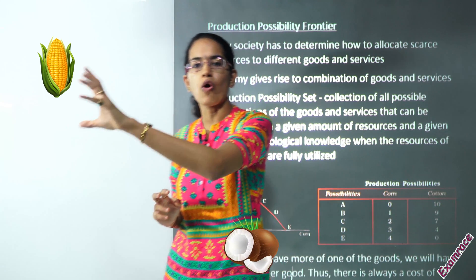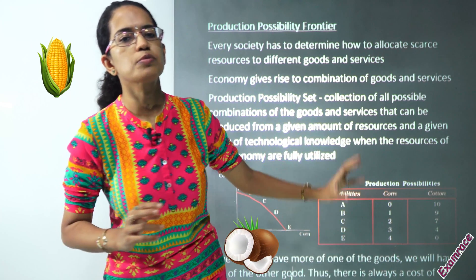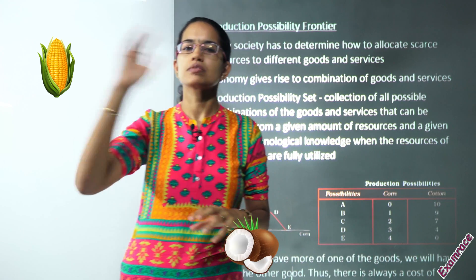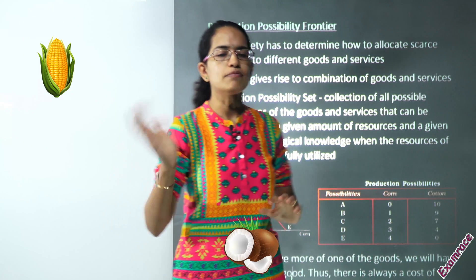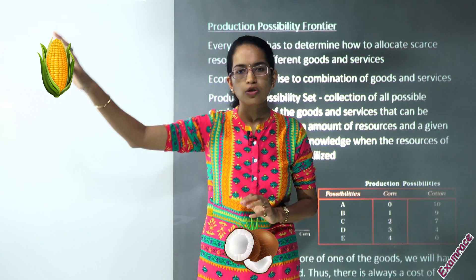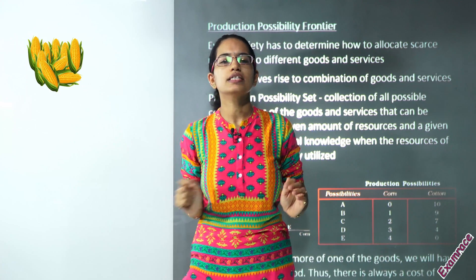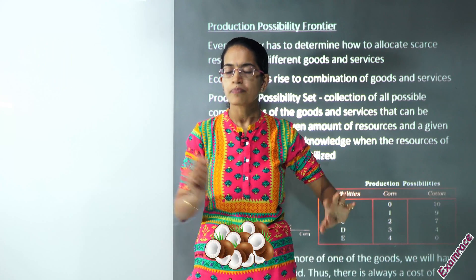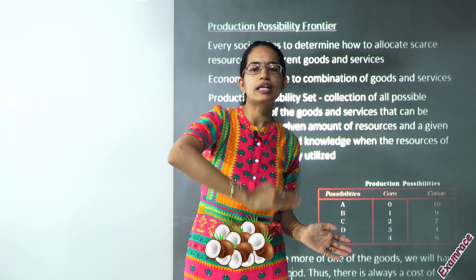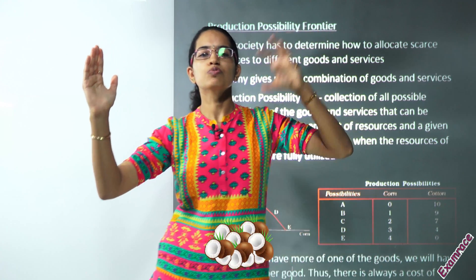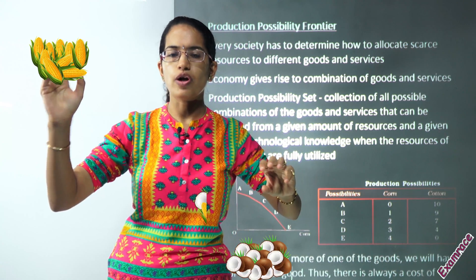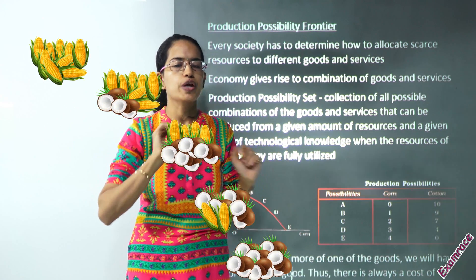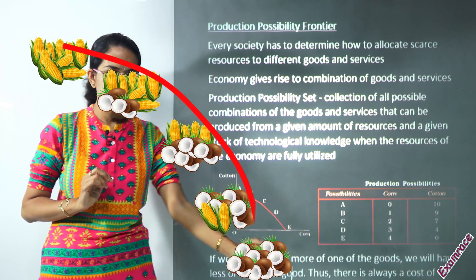So how much proportion of corn could be produced versus how much proportion of coconut could be produced is understood by a production possibility curve. There is one possibility where I produce all corn and no coconut, another where I produce all coconuts and no corn, and an intermediate scenario where I produce more of coconut and less of corn, or more of corn and less of coconut.